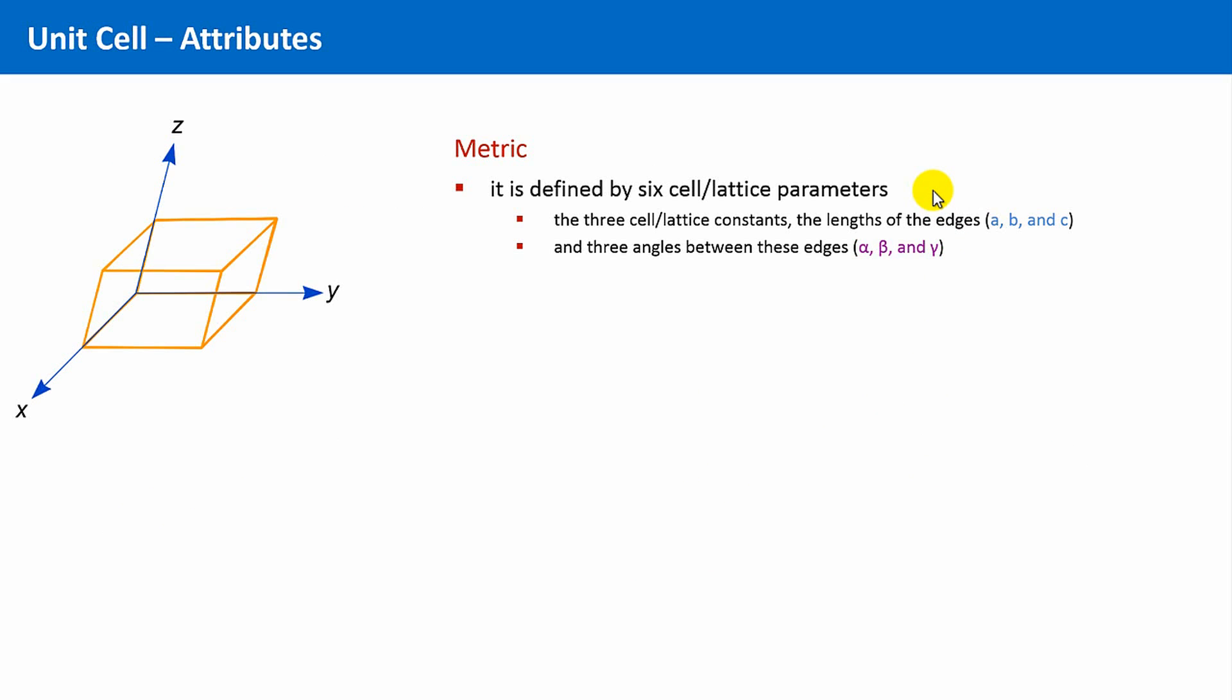First, the length of the edges a, b and c. By definition, a is running along the x-axis of the coordinate system, b along y and c along z.